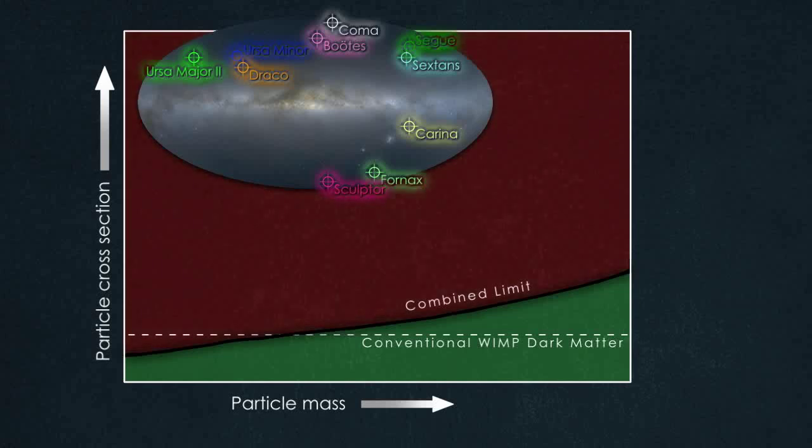This limit shrinks the box where WIMP-based dark matter may be found, and, for the first time, shows that the cosmology we know essentially eliminates some WIMP types.